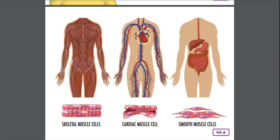The muscular system also provides a framework of the human body together with the skeletal system. If you did not have a skeletal system and a muscular system working together, you would not be able to move. Without muscles, you'd be a blob with no way to move forward. Without a skeleton, your muscles would have nothing to pull on. Both systems must work together.